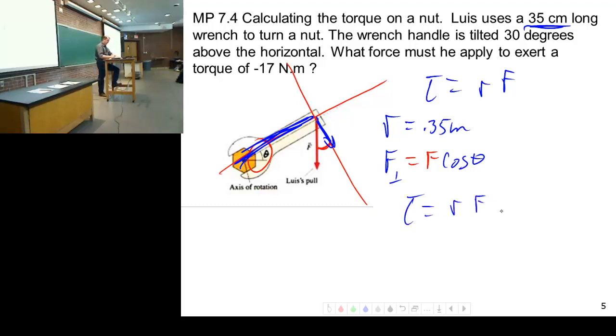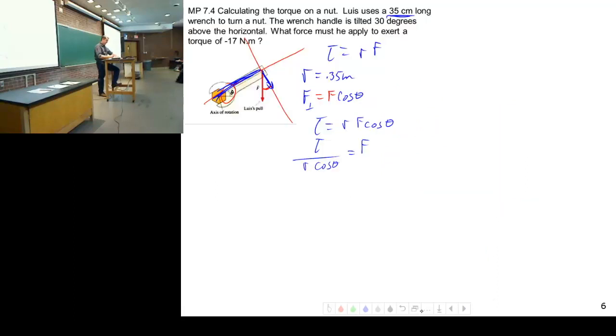Torque is going to be RF cos theta. What am I solving for? F, right? F is my unknown, so that's torque divided by R cos theta gives you the force I'm looking for. And I know my torque is 17 divided by 0.35 multiplied by cosine of 30. If I plug and chug and grind that out, I get 56.01 newtons.